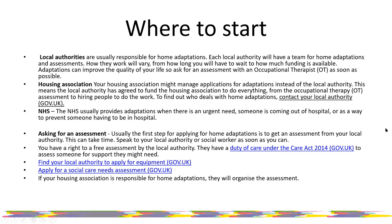In some areas, housing associations are responsible for aids and adaptations. If you go onto the gov.uk website — I'll put a link there — you should be able to put in your postcode and it will tell you who deals with that in your local area. The NHS provides adaptations and equipment usually when there's an urgent need — if you're coming out of hospital, or if there's something they can do around your home that prevents you having to go into hospital. You have a right under the duty of care act to have an assessment for support that you might need.